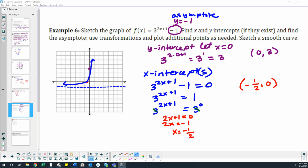I just realized that I made a mistake. So here it is. When I did the y-intercept, I let x equal 0 and I plugged it in, but then I forgot about the extra negative 1 at the end of that problem right there.